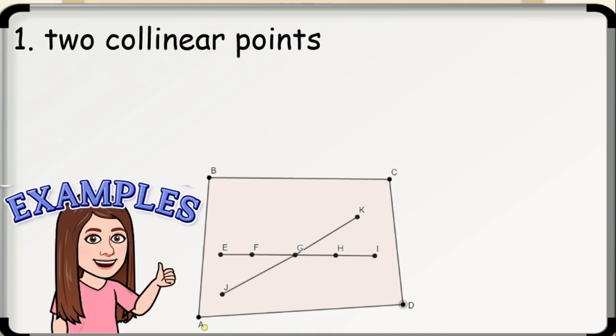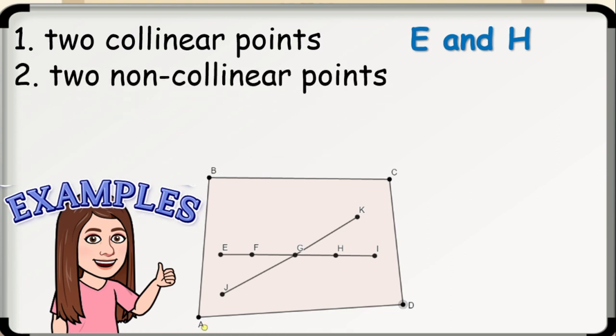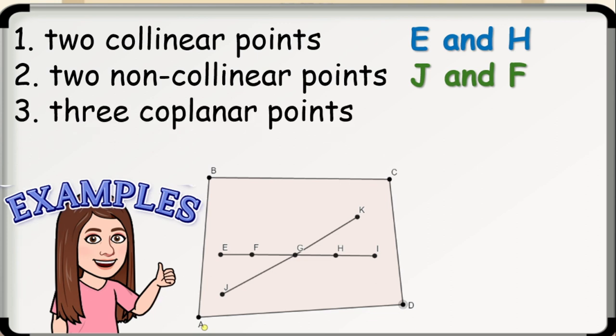Number one, two collinear points. We have point E and point H. But remember, that's just one of the many possible examples of coplanar points in the given figure. Number two, two non-collinear points. We have point J and point F. Again, you can list as many as possible.